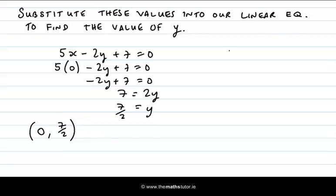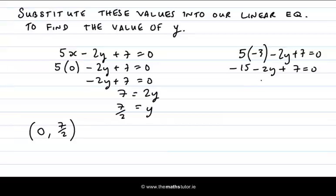The other one we substitute in 5 times minus 3 minus 2y plus 7 equal to 0. So that's minus 15 minus 2y plus 7, which gives me minus 8 minus 2y equal to 0. So that minus 8 is equal to 2y. And y is equal to minus 8 over 2. So y is equal to minus 4.